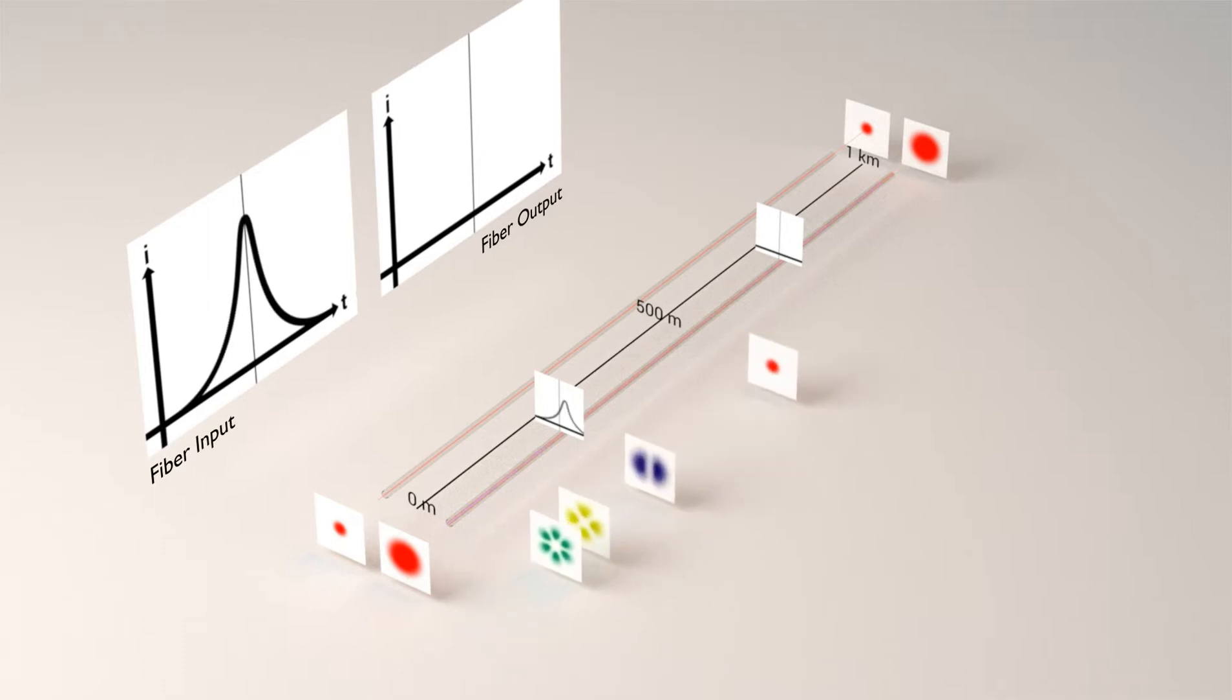For a given light pulse, modal dispersion leads to distortion of the input signal. After propagation, the input signal will be deformed, degraded and ultimately unrecognizable.